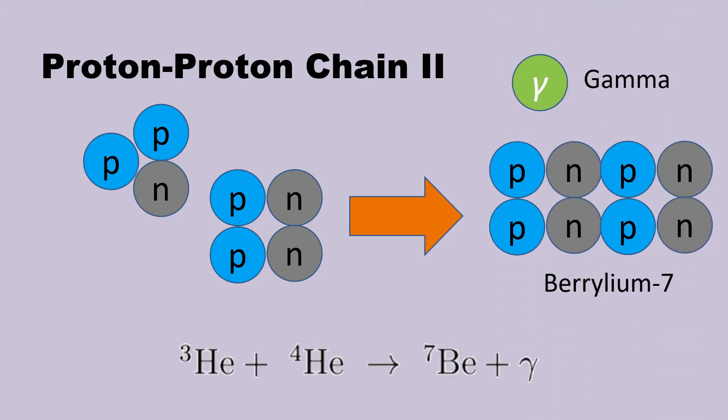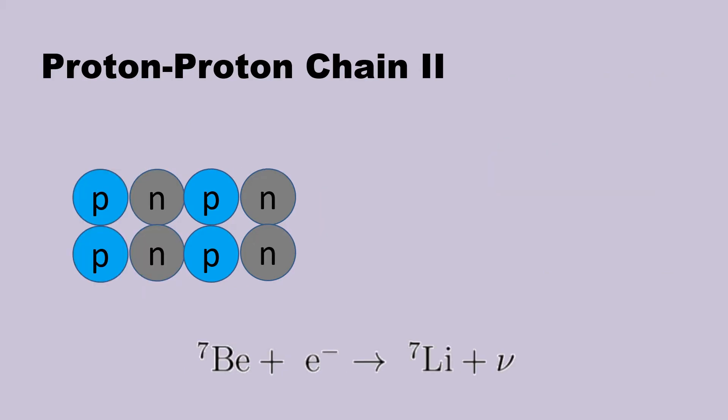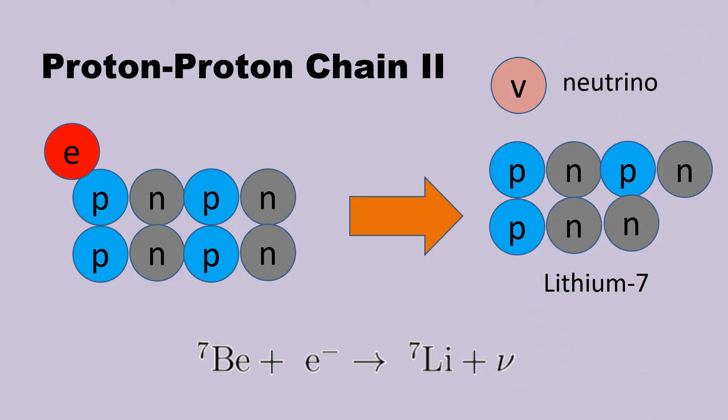Fusing helium-3 and helium-4, we produce beryllium-7 and gamma radiation. By using this beryllium-7 and fusing this with an electron, produces the isotope lithium-7 and a neutrino.